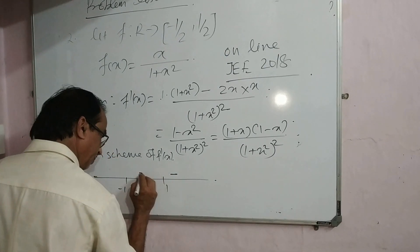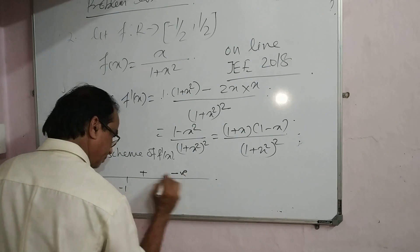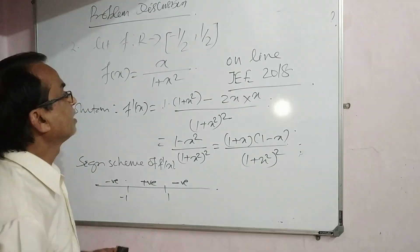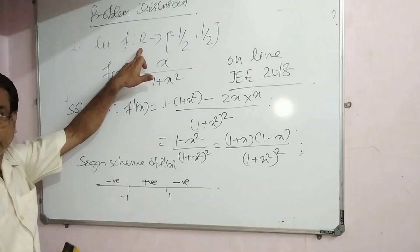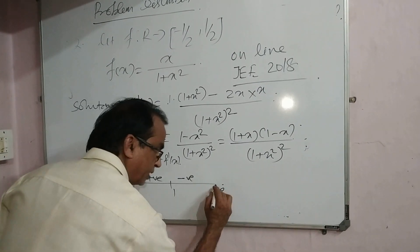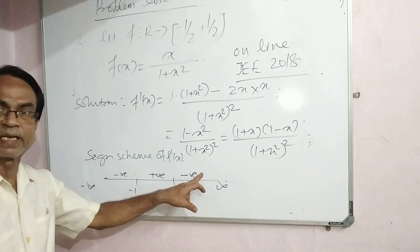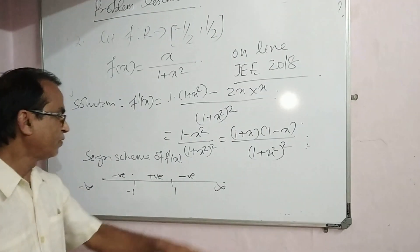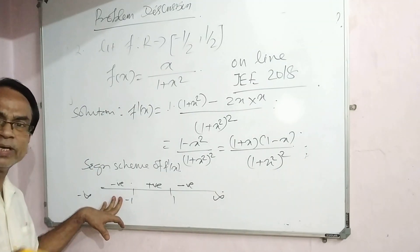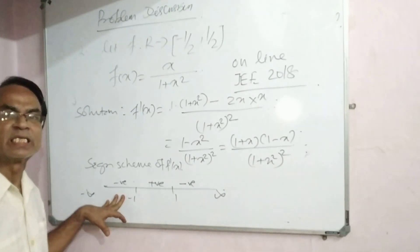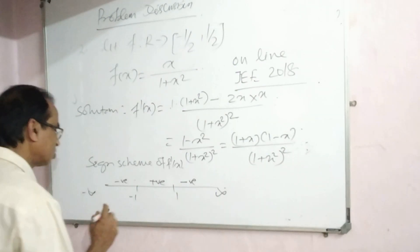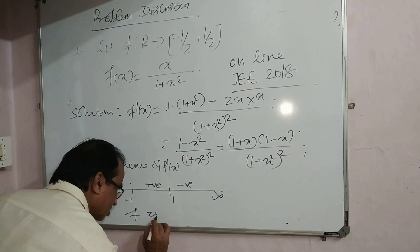The sine scheme of f'(x) is negative at minus 1, positive at 1. The domain is the set of real numbers from minus infinity to plus infinity. The function is decreasing from 1 to infinity and increasing, then decreasing. The function is not maintaining the same character throughout the domain, so it is not injective.